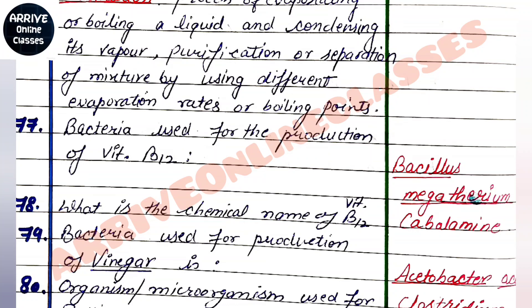The bacteria used for the production of vitamin B12 is Bacillus megaterium. The chemical name of vitamin B12 is cobalamin. The bacteria used for the production of vinegar is Acetobacter acidi.